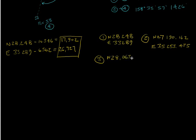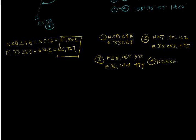Point 2 has a northing of 27,190 and an easting of 35,253. Point 3 has a northing of 28,006 and an easting of 36,144.